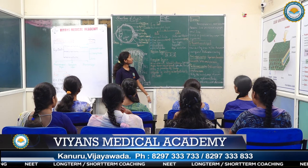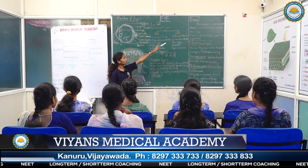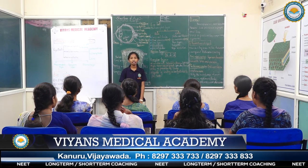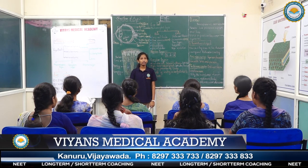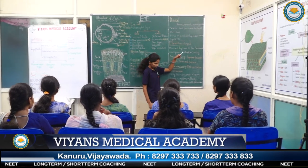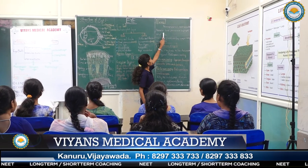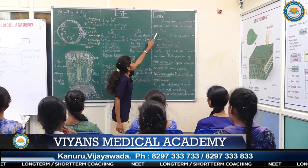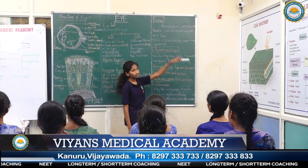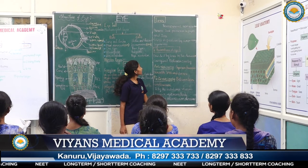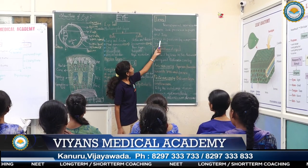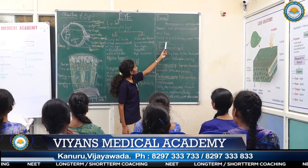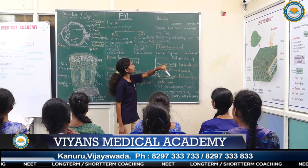Coming to the lens, it is transparent, non-vascular, and present posterior to the pupil and iris. It is held in position by the suspensory ligaments.